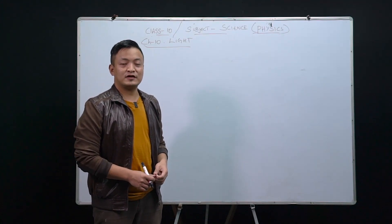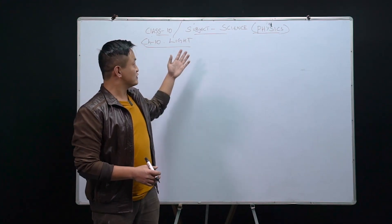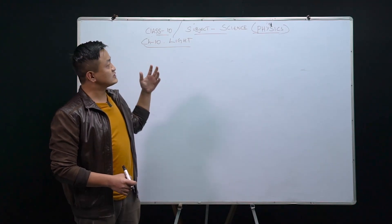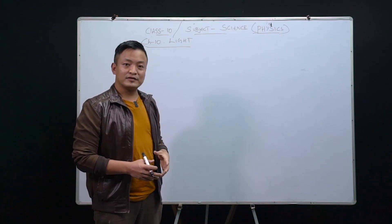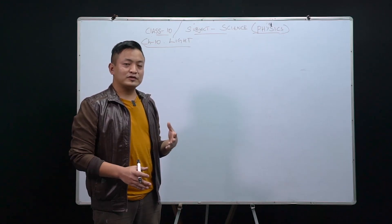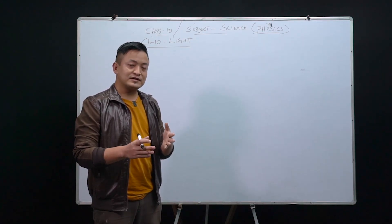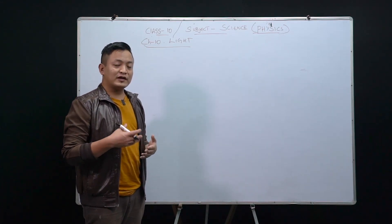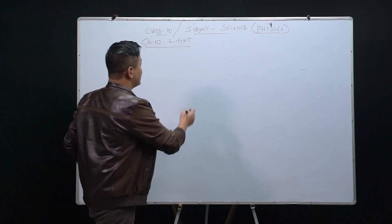Hello, dear Class 10 students. We'll continue from where we left in our last class. We are in Chapter 10, the light physics portion. We have finished the introduction part, the reflection of light, the laws of reflection, and studied the convex mirror and concave mirror in detail. In the last class I gave an example of concave mirror, so today I will give an example of convex mirror.